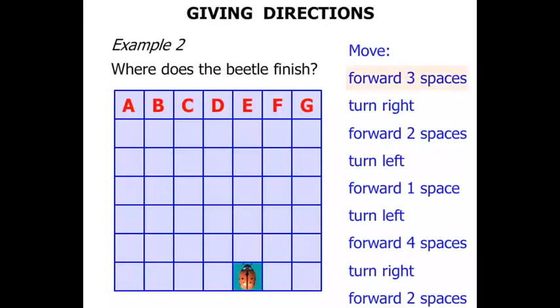So starting there. Forward three spaces. One, two, three. And then the beetle turns right. Watch the beetle turn right. There we go.